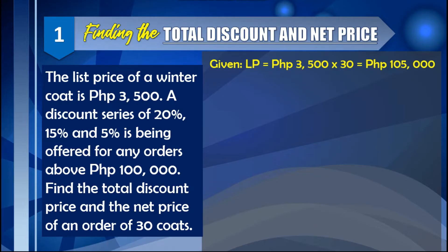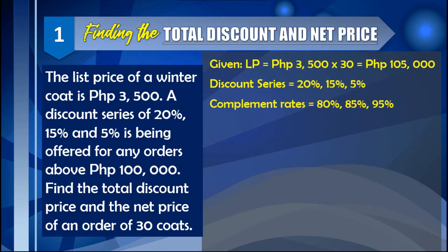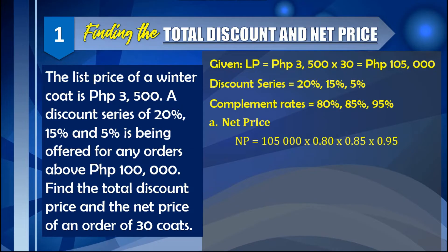Multiplying 3,500 by 30 coats gives us a total list price of 105,000. The discount series is 20%, 15%, and 5%. Finding the complement rates by subtracting each from 100%, we get 80%, 85%, and 95%. So the net price is: NP = 105,000 × 0.80 × 0.85 × 0.95, which equals 67,830.